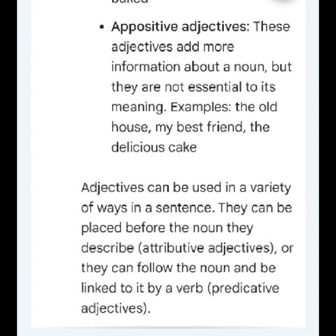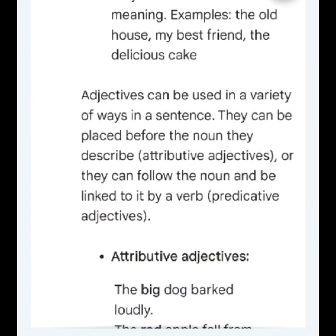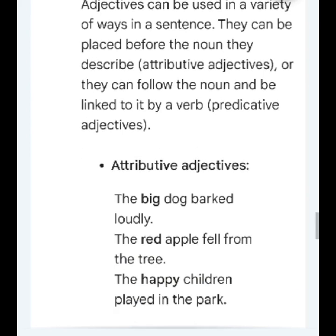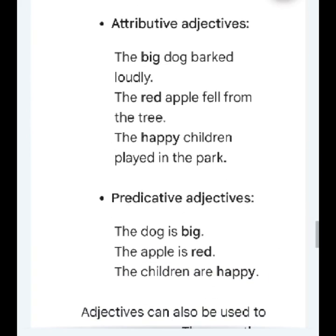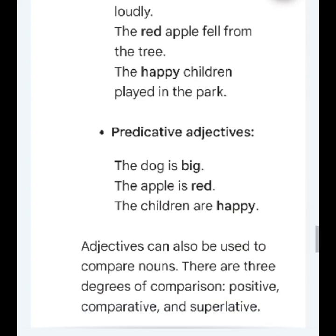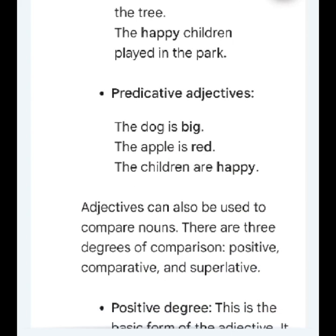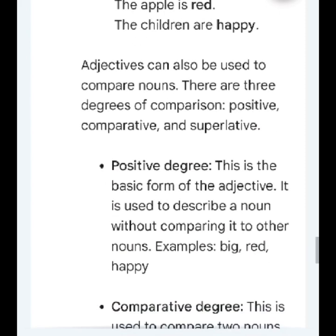Adjectives can be used in a variety of ways in a sentence. They can be placed before the noun they describe — attributive adjectives — or they can follow the noun and be linked to it by a verb — predicative adjectives. Attributive examples: the big dog barked loudly; the red apple fell from the tree; the happy children played in the park. Predicative examples: the dog is big; the apple is red; the children are happy.